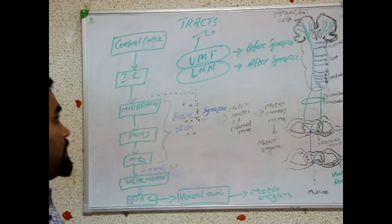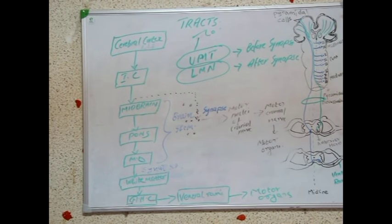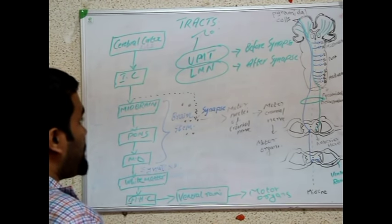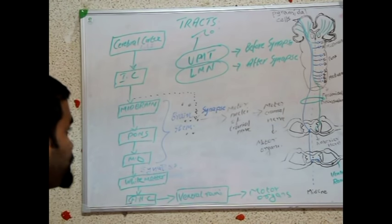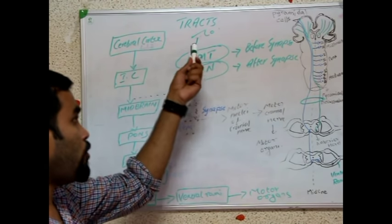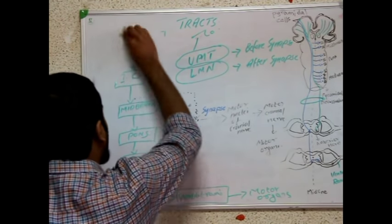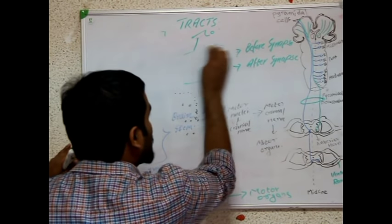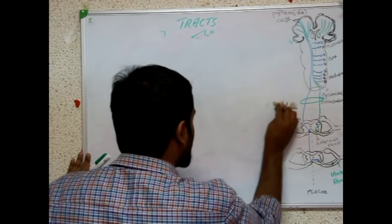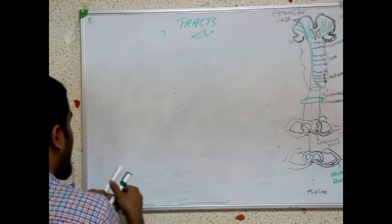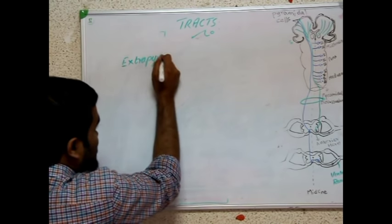This is a brief overview of the pyramidal system. Now I will explain briefly about the extrapyramidal system. We learned the pyramidal system: the two types — corticospinal and corticobulbar tracts — how they move, the difference between upper motor tract and lower motor neuron, and decussation. Now let's see what is meant by the extrapyramidal tract. The extrapyramidal tract refers to tracts which do not pass through the pyramidal system in the medulla oblongata.